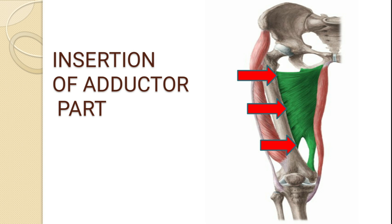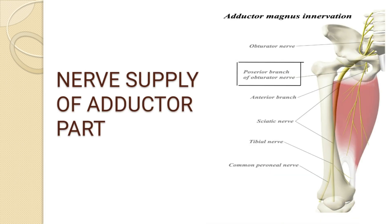The adductor part of the adductor magnus muscle is inserted into the medial margin of the gluteal tuberosity, the linea aspera, and the medial supracondylar line.